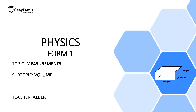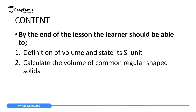Hello students, welcome to EasyLimu — Learning Simplified. In the previous lessons we discussed types of quantities: basic and derived quantities, and we discussed volume as an example of a derived quantity. In this lesson we are going to discuss volume. By the end of this lesson you should be able to define volume, state the SI unit of volume, and calculate the volume of common regular-shaped solids.